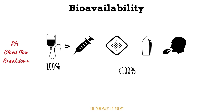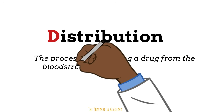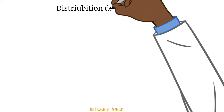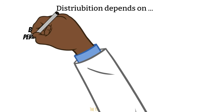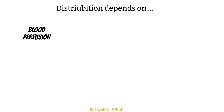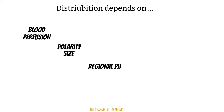Now that the drug is in the bloodstream, that brings us to the next PK parameter: distribution. This is the process of delivering a drug from the bloodstream into the tissues of the body. Distribution depends on the biochemical properties of the drug and the individual receiving it. If there is reduced blood flow to a specific part of the body, less drug will reach there. The more lipophilic the drug is, the easier it is to cross membranes into cells, while bigger drugs have more difficulty. The pH of the site of action is also important — if the site is acidic and the drug is also acidic, crossing the membrane is easy, but if the site is acidic and the drug is basic, the drug becomes charged and has difficulty crossing.